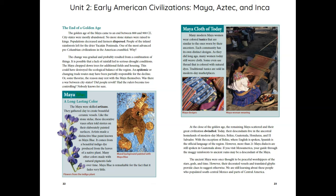Maya Blue — a long-lasting color: The Maya were skilled artisans. They gathered clay to create beautiful ceramic vessels. Like the stone stele, these decorative vases often told stories on their elaborately painted surfaces. Artists made a distinctive blue paint known as Maya Blue. It comes from a beautiful indigo dye produced from the leaves of a native plant. Many other colors made with natural pigments fade over time, but Maya Blue is remarkable for the fact that it fades very little.